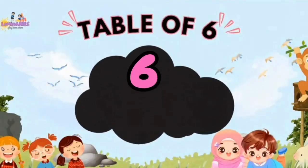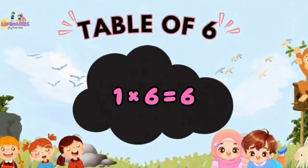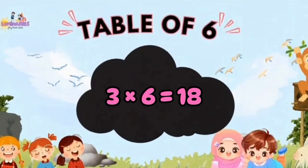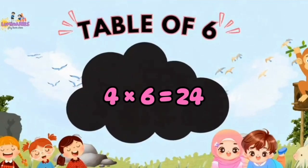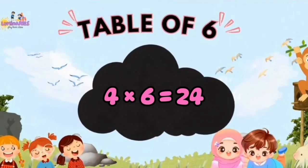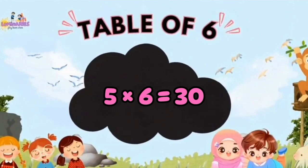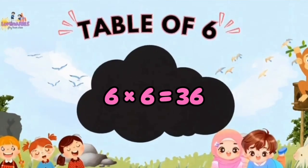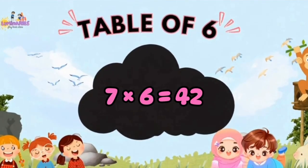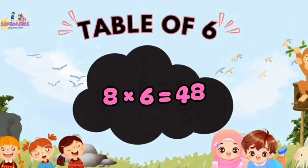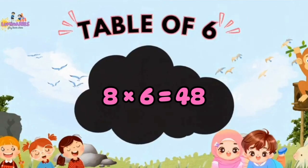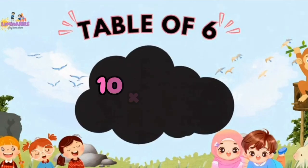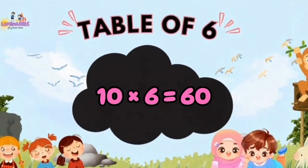Table of 6. 1 x 6 is 6. 2 x 6 is 12. 3 x 6 is 18. 4 x 6 is 24. 5 x 6 is 30. 6 x 6 is 36. 7 x 6 is 42. 8 x 6 is 48. 9 x 6 is 54. 10 x 6 is 60.